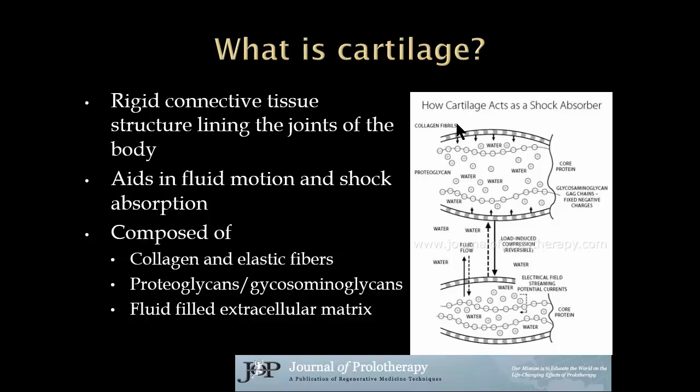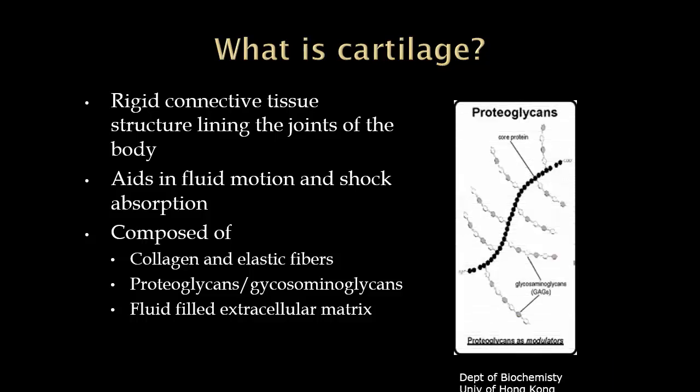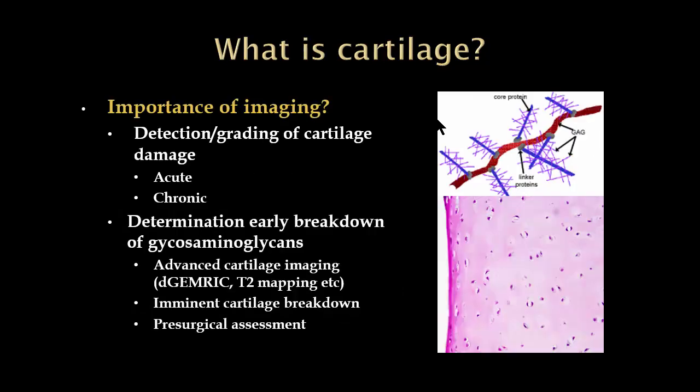So what is cartilage? Cartilage is a rigid connective tissue structure that lines the joints of the body, aiding in fluid motion and shock absorption. It's made up of collagen and elastic fibers surrounding a very gelatinous, spongy extracellular matrix, which is predominantly water with interspersed proteoglycans and glycosaminoglycan particles. A proteoglycan is a core protein with multiple branching negatively charged glycosaminoglycan particles coming off of it.